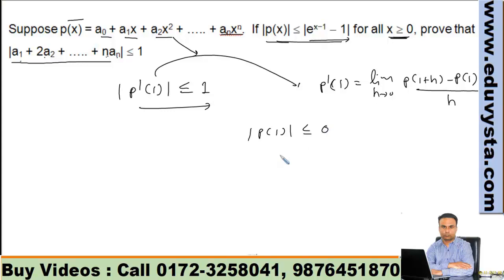Hai na? Quite user-friendly data. Thik hai, toh p'(1) - now this is limit h tends to 0, p(1+h) by h. Ab iske bad aap try karo, socho - ye kaise aayega p(1+h) by h? How you get this?